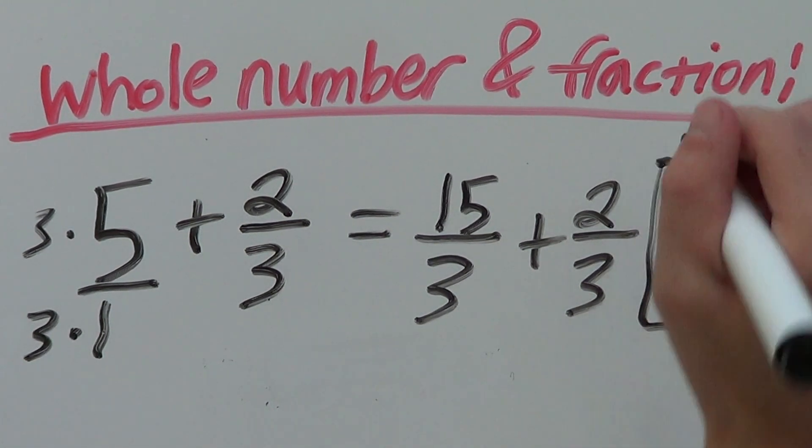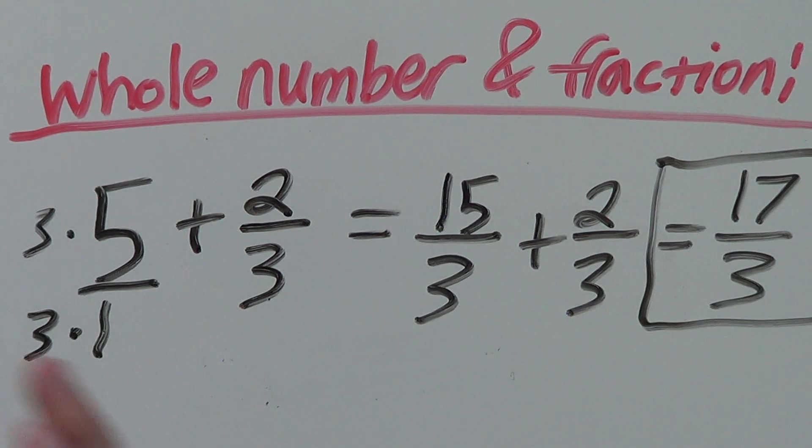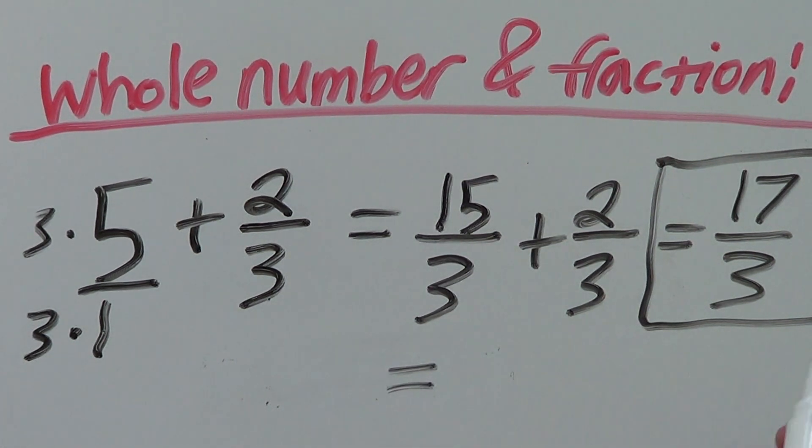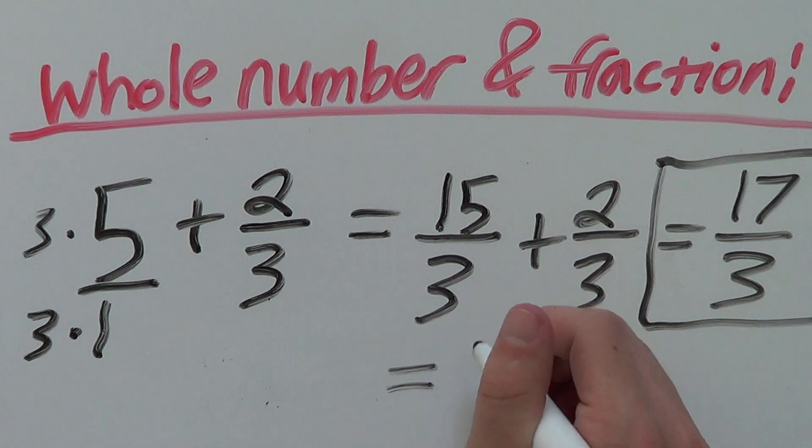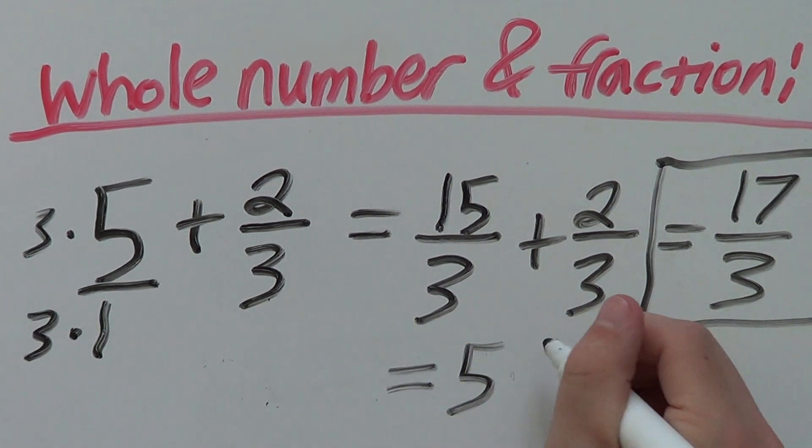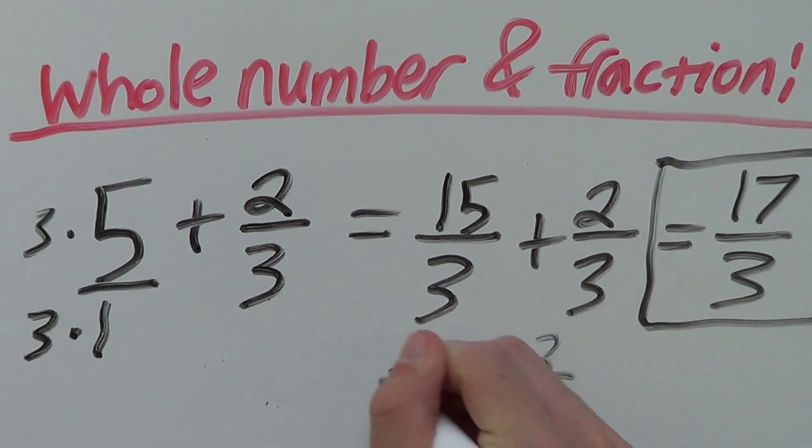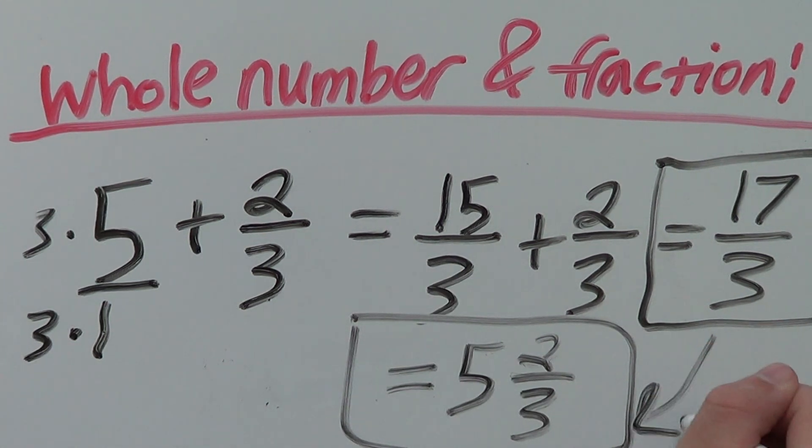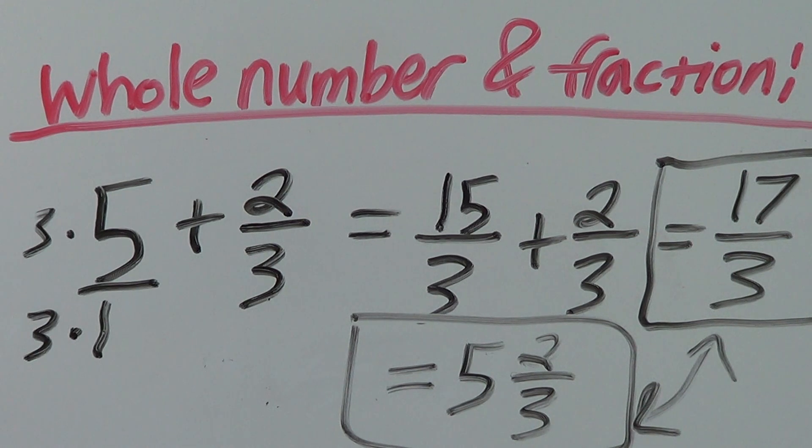which is our answer. But sometimes on the test, it may want you to write this as a mixed number. If that is the case, 3 goes into 17 five times with a remainder of 2. So our mixed number is 5 and 2 thirds. Either of these answers are fine, and that is how you add a whole number and a fraction.